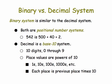The binary system is very similar to the decimal system. Both are considered positional number systems. That means that the value of a particular digit, like the digit 5 in 542, depends on its place. So 5 is in the hundreds place, so it represents 500, and 4 is in the tens place, so it represents 40.